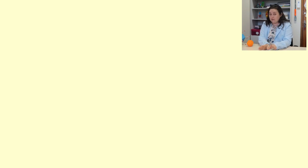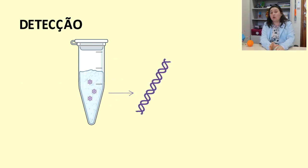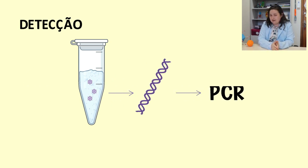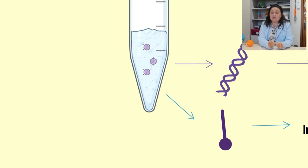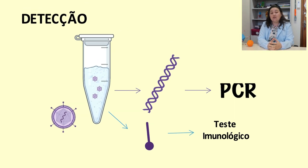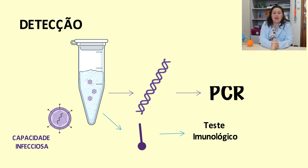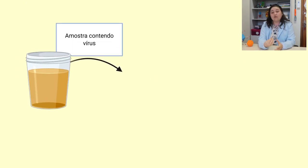Agora já temos os vírus eluídos e podemos seguir com a análise para detecção e quantificação viral. Normalmente, o que se faz pela praticidade é buscar o genoma do vírus pela técnica de PCR e suas variações, bem como proteínas estruturais virais. No entanto, temos que lembrar que ao detectar o genoma ou parte de um vírus, nós não estamos inferindo a sua capacidade infecciosa. Logo, para fazer inferência sobre capacidade infecciosa viral, é possível e se faz necessário o isolamento desses vírus em cultivo celular.